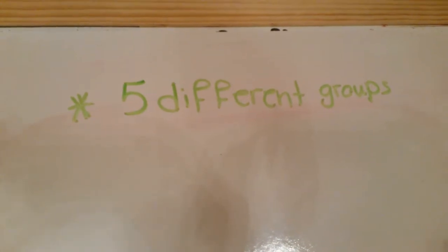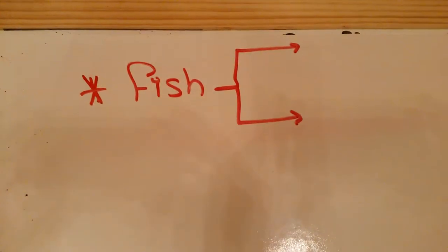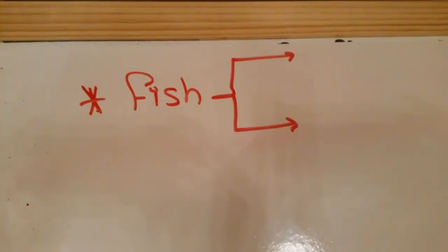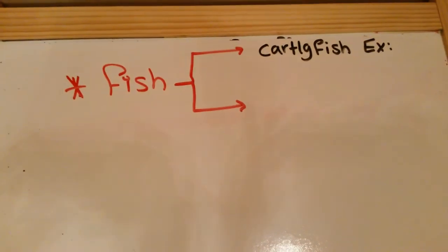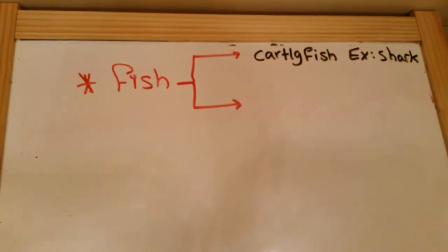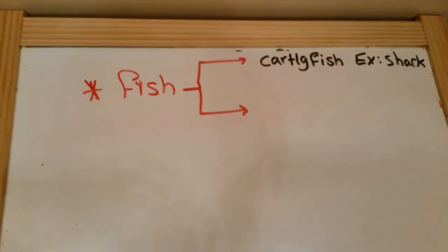The first group is fish. Fish is divided into two sections. Cartilaginous fish, e.g. shark, and bony fish, e.g. clownfish.